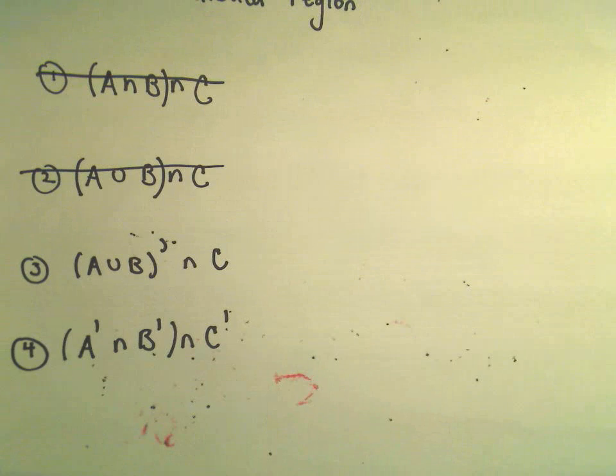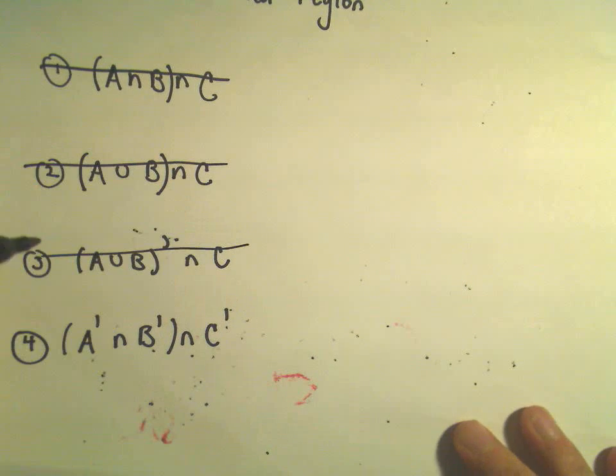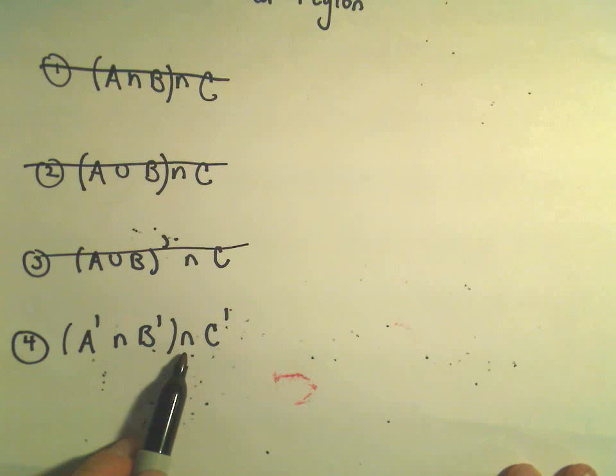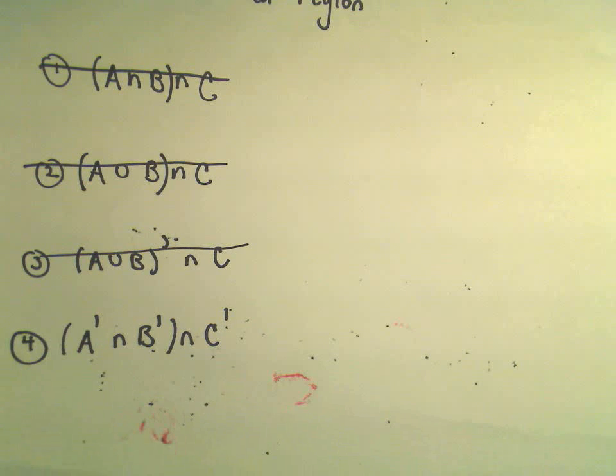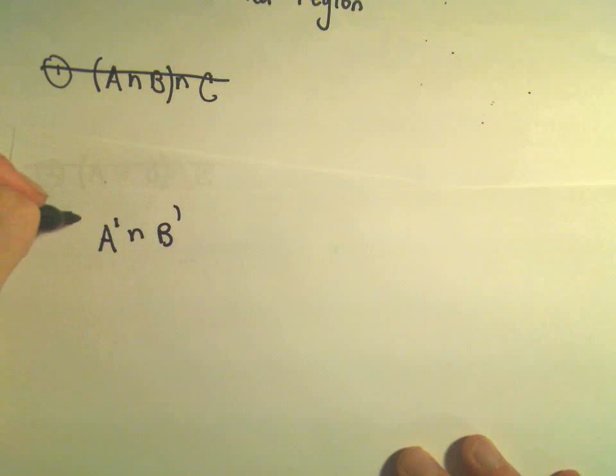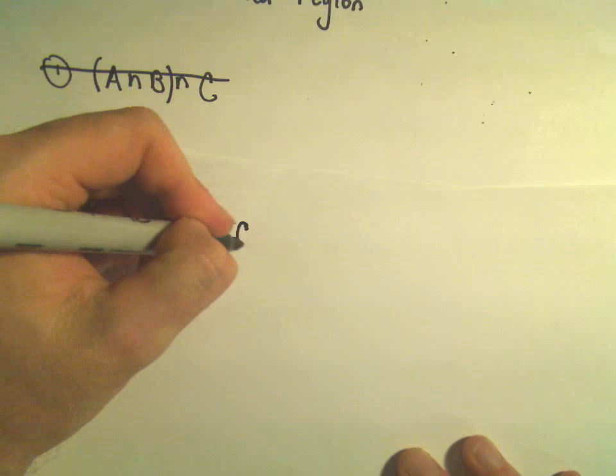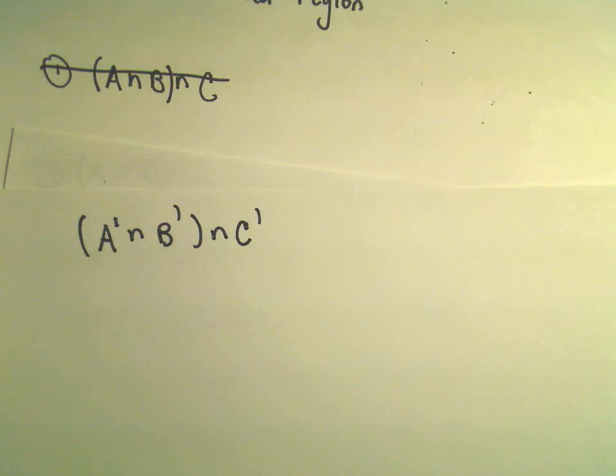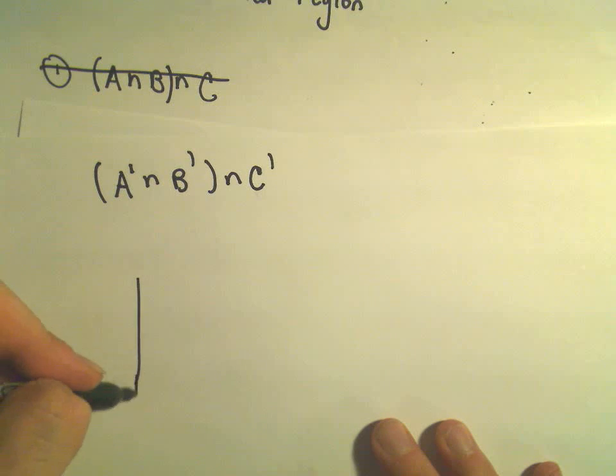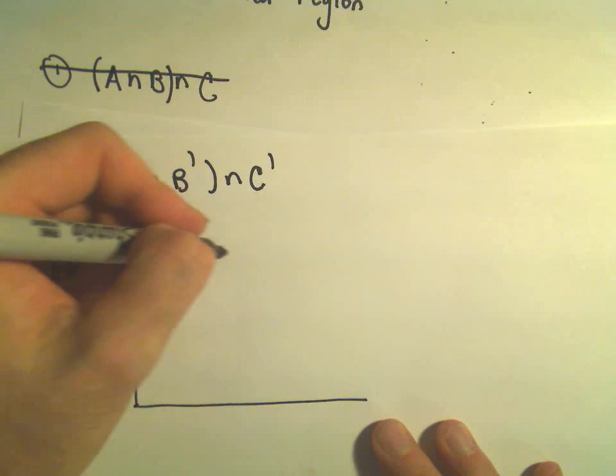All right, let's do the very last example here, getting a little inked up. So we're going to do not A and not B and not C. And I think this is one maybe you should try to practice on your own. I'm going to give you the answer here, and you can check and make sure that I'm correct.